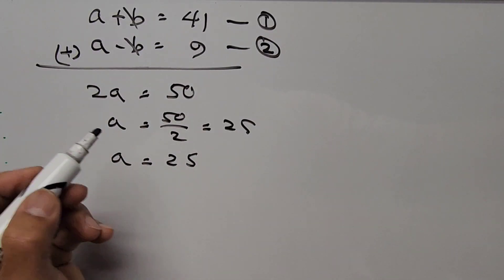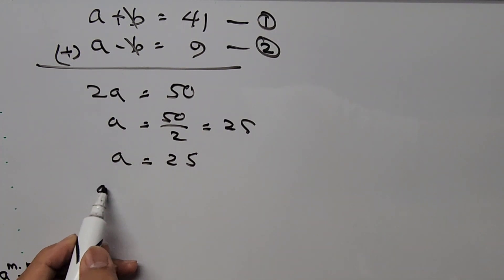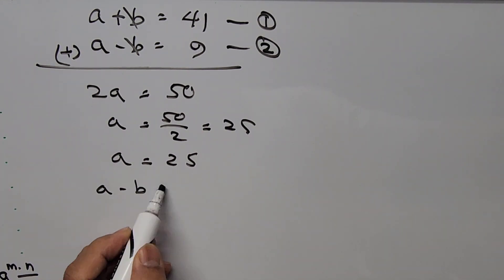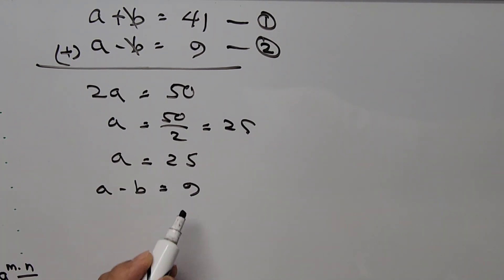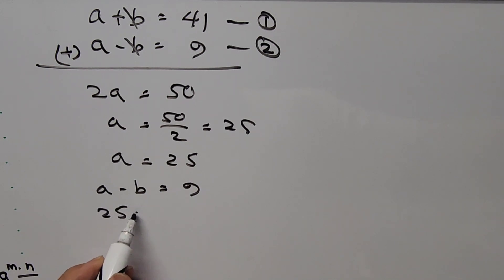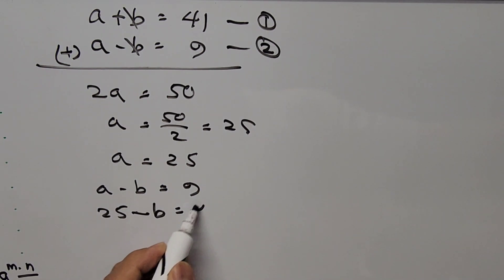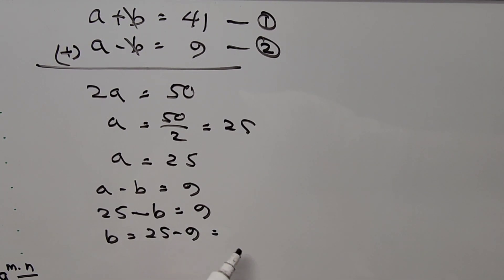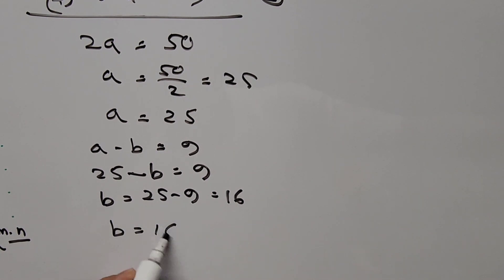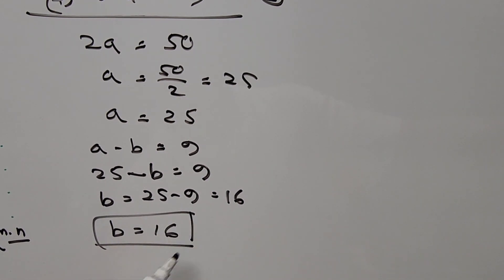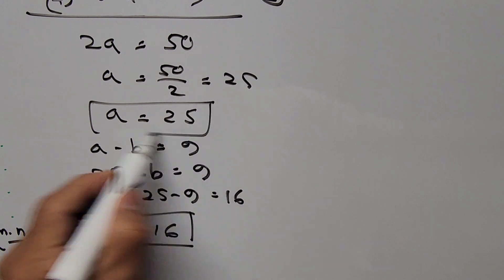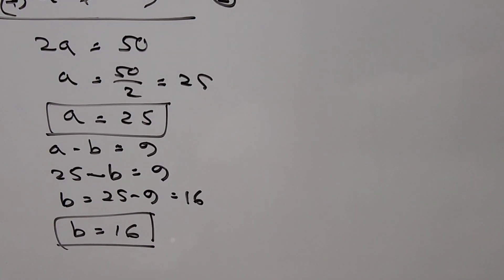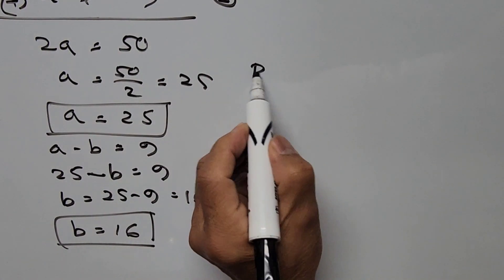Solving for b: from equation 2, a minus b equals 9, and a is 25, so 25 minus b equals 9, giving b equals 25 minus 9, which is 16. So b equals 16 and a equals 25.